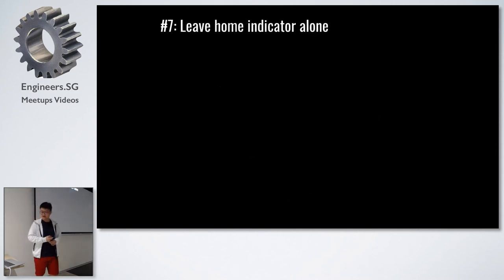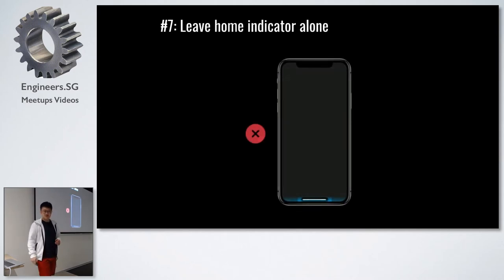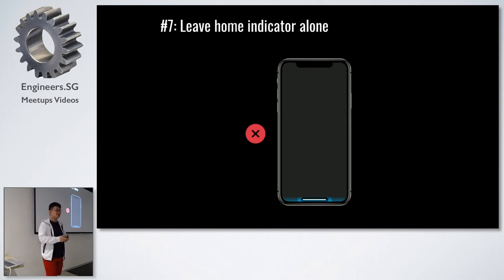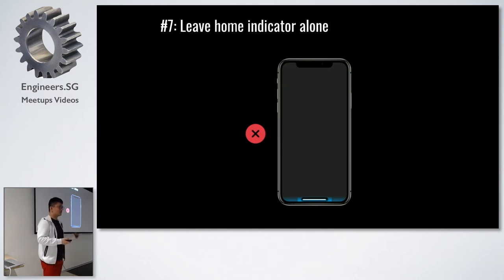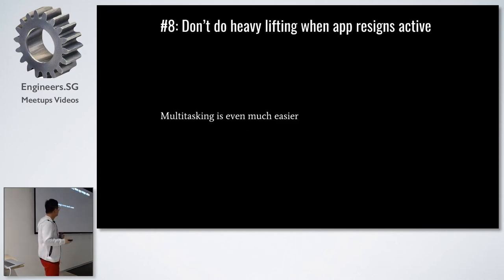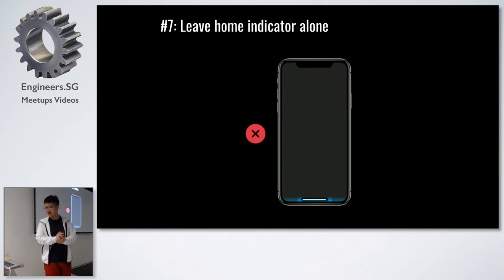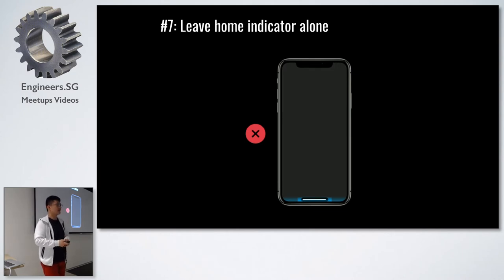Leave the home indicator alone — don't do anything about it. Don't put any adornments such as background colors, shapes, bezels, or directional text to draw attention. The home indicator handles itself: it's white on dark backgrounds and dark on white backgrounds. Also, do not add any gesture recognizers at the bottom of the screen, because that might conflict with the home indicator's gesture recognizer.